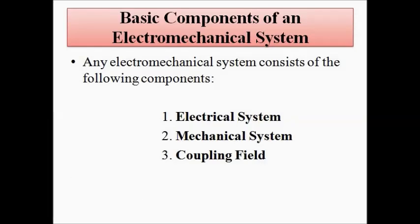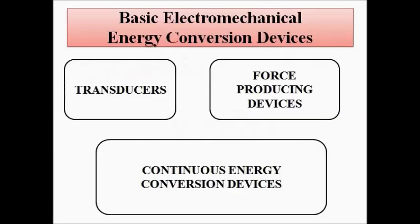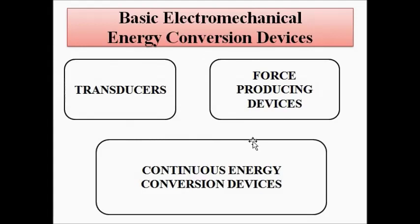Coming to the electromechanical energy conversion devices — these devices can be broadly classified into three main categories. First is transducers, the electromechanical transducers. Second is force producing devices. And the third is continuous energy conversion devices. All electromechanical devices come under one of these three categories.